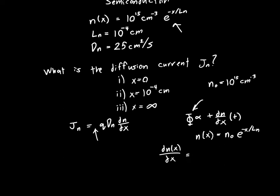So if we differentiate this equation, it's just negative n-naught over Ln, just the minus 1 over Ln comes out front, times e to the minus x over Ln.